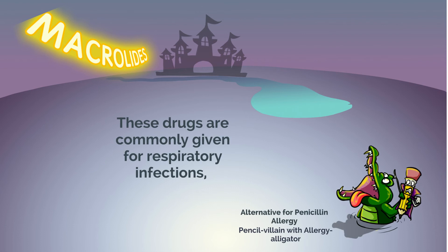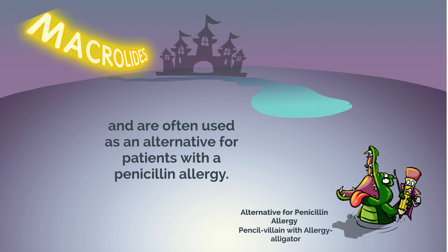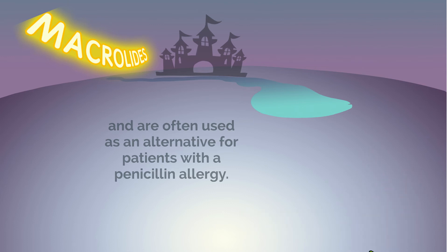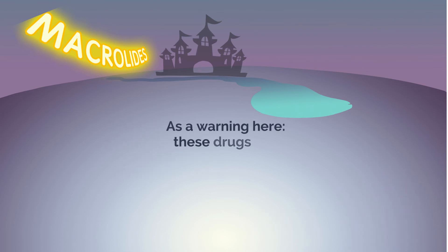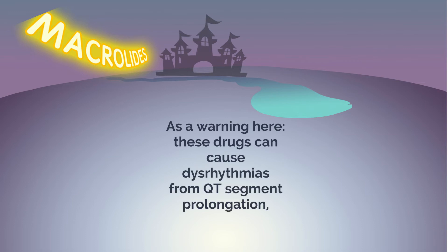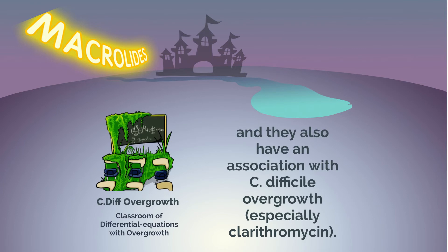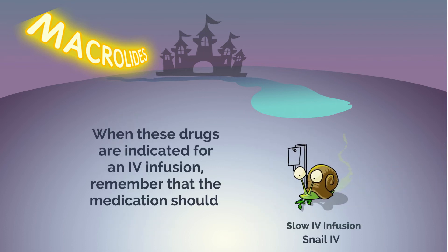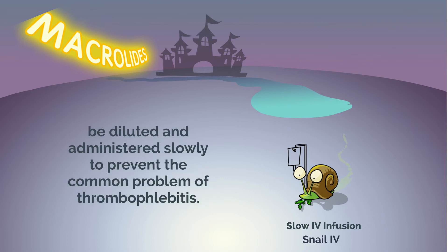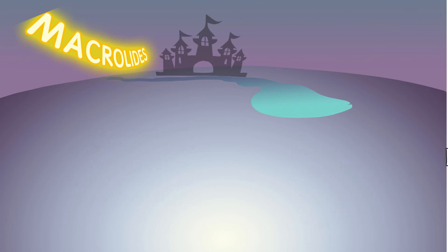These drugs are commonly given for respiratory infections and are often used as an alternative for patients with a penicillin allergy. As a warning, these drugs can cause dysrhythmias from QT segment prolongation, and they also have an association with C. difficile overgrowth, especially clarithromycin. When indicated for IV infusion, the medication should be diluted and administered slowly to prevent thrombophlebitis.